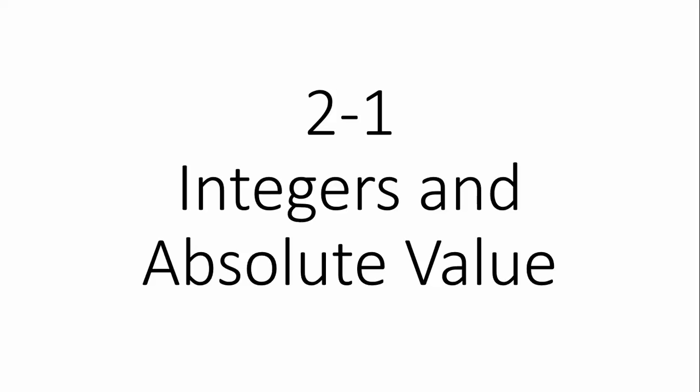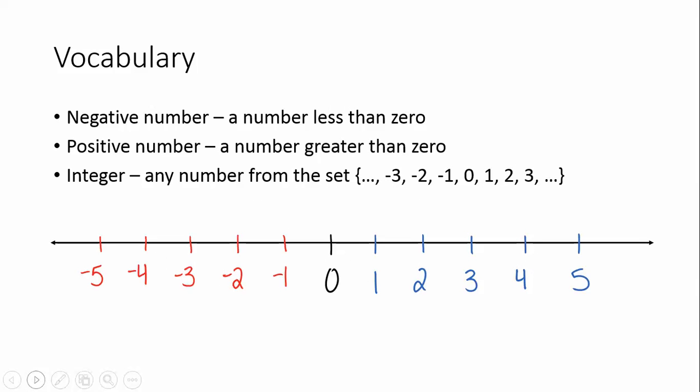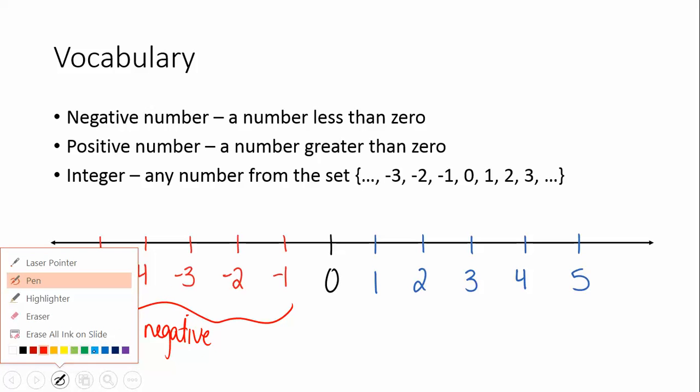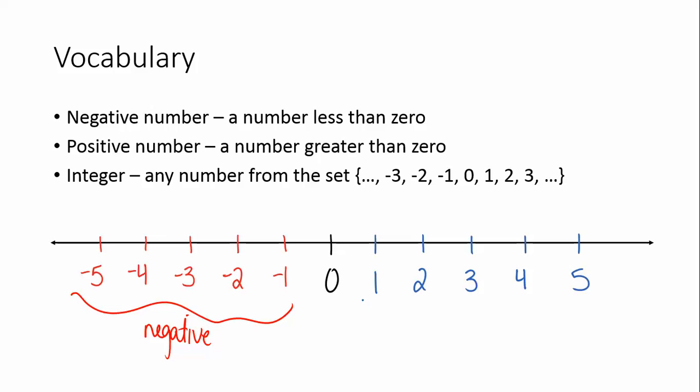The first section in Chapter 2 is titled Integers and Absolute Value. Some vocabulary terms: A negative number is a number that is less than zero, and all of the numbers here in red are negative numbers. A positive number is a number that's greater than zero. All of the numbers in blue are positive numbers.